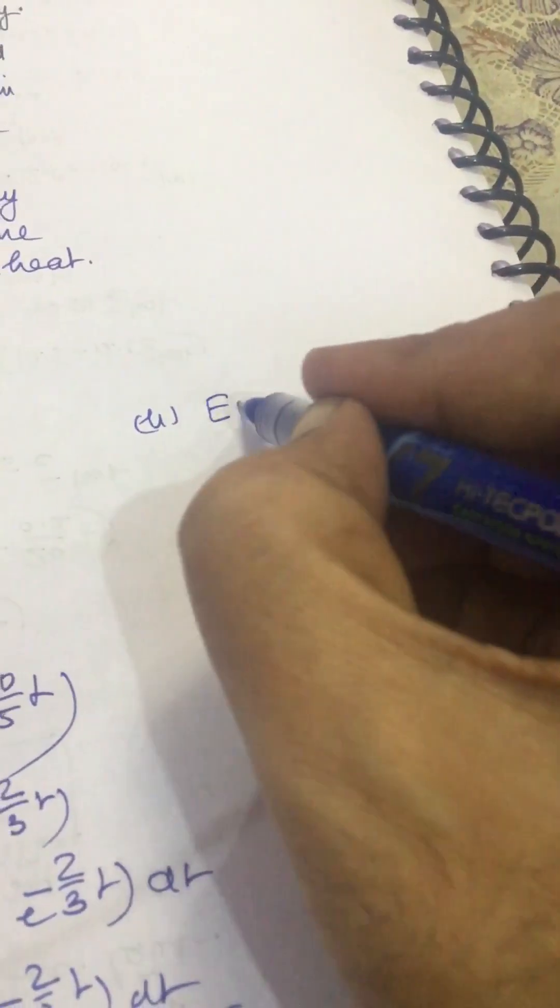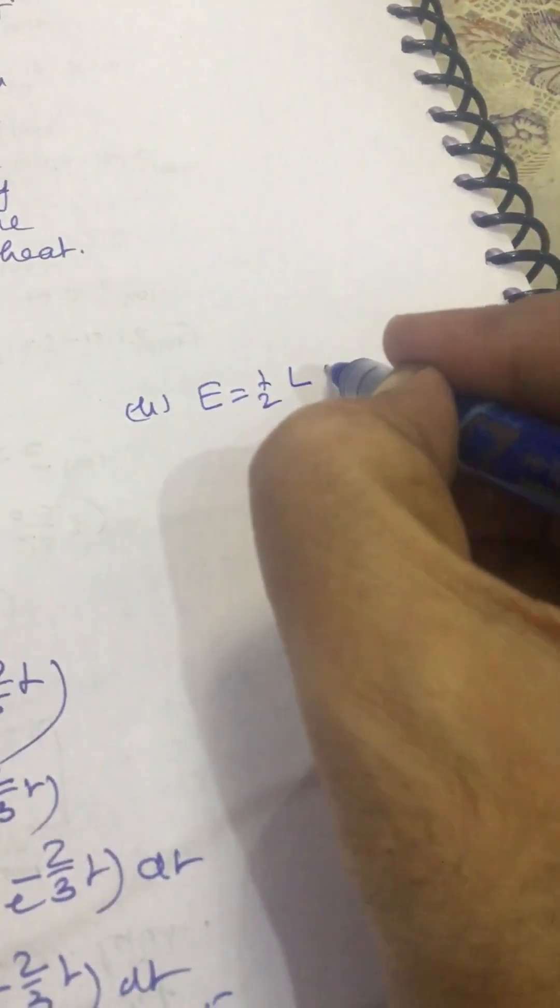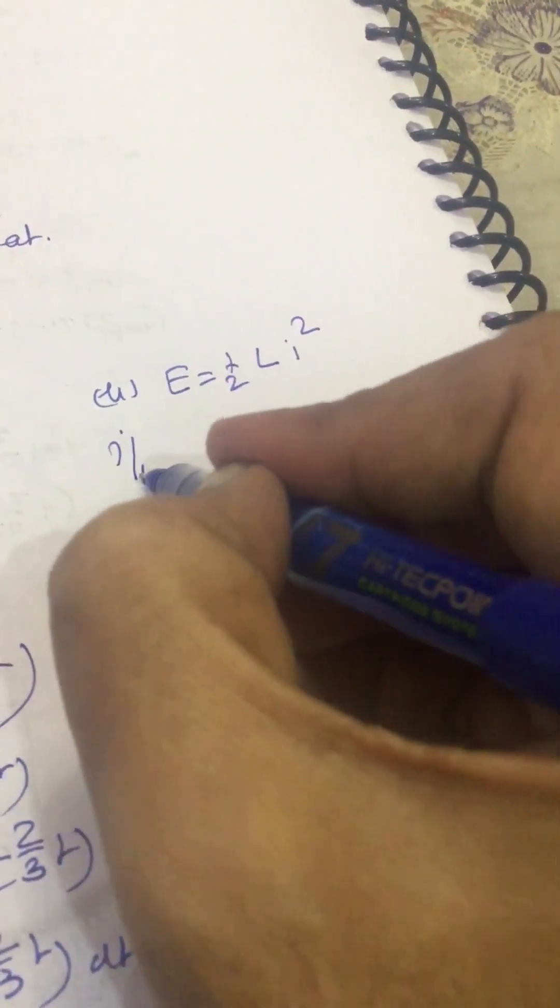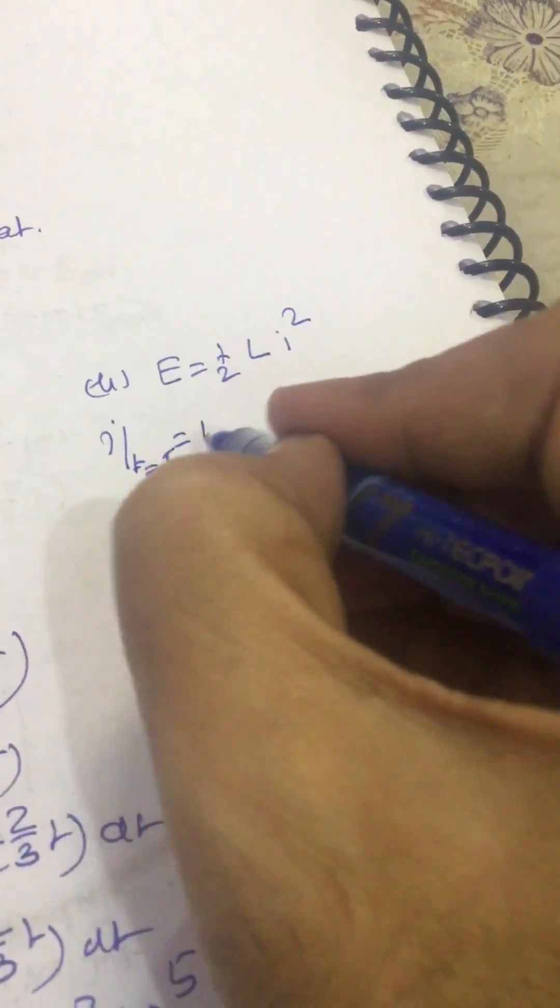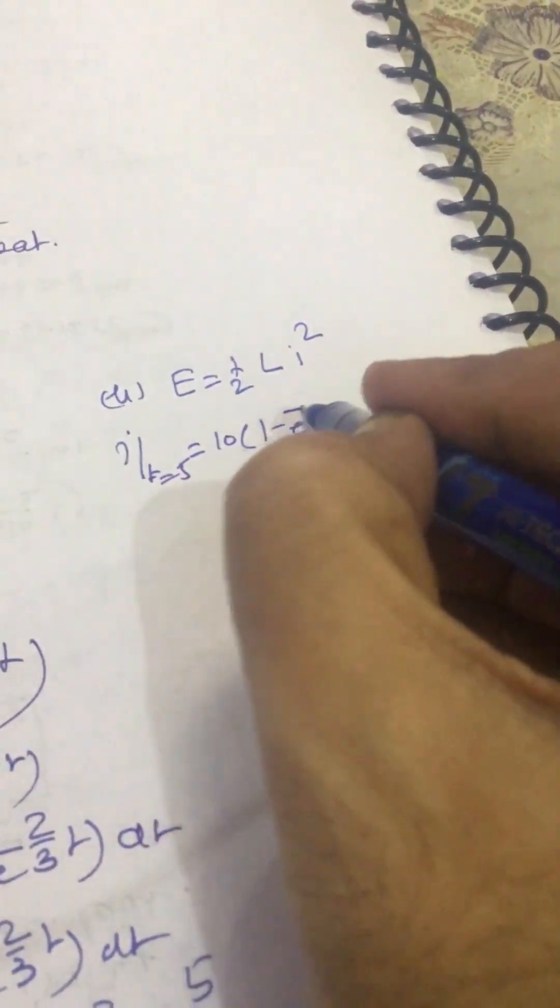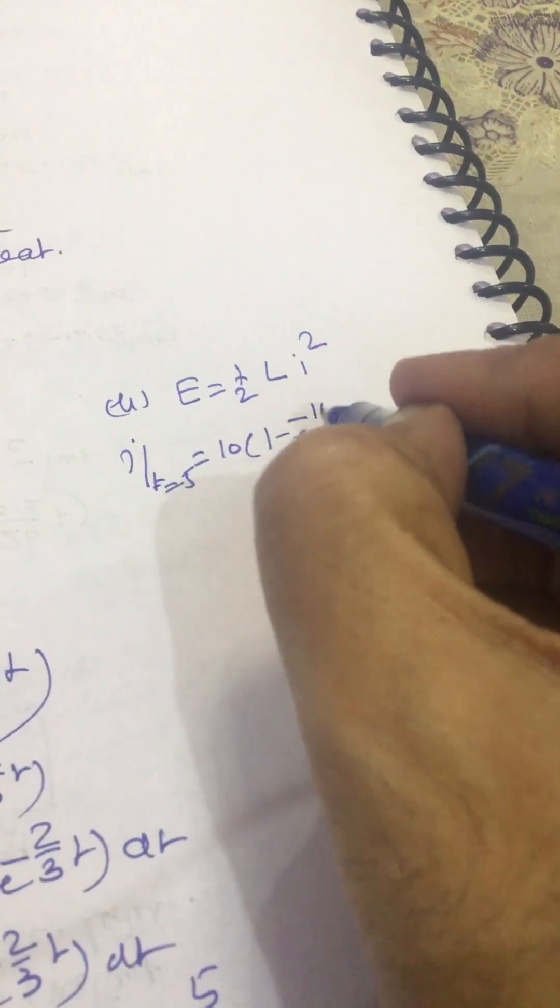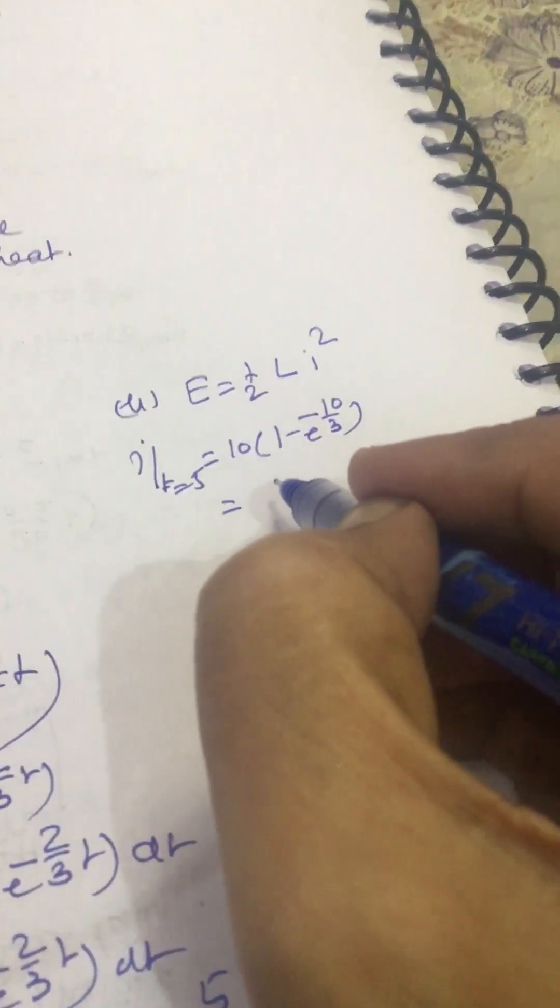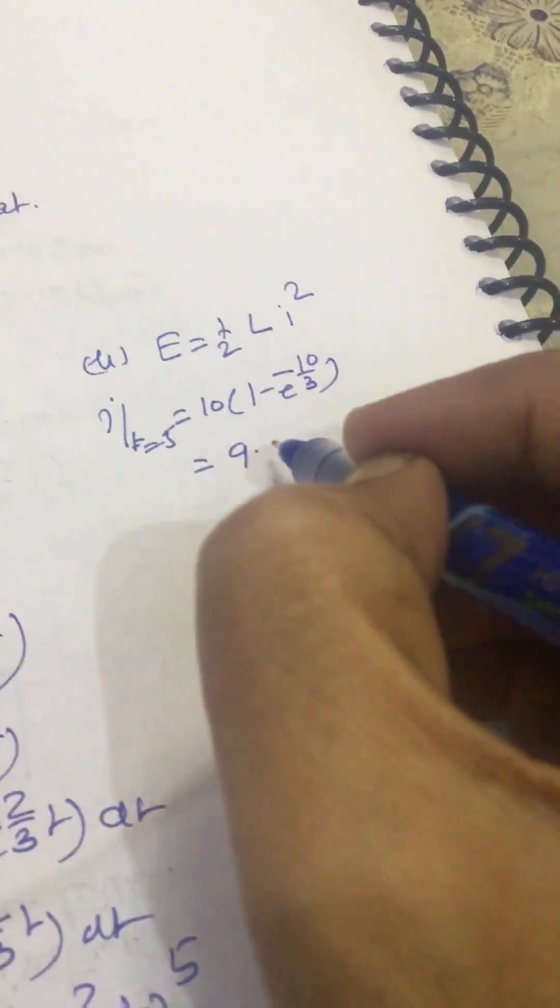E is half L i squared. Current i at t equal to 5 will be 10 times 1 minus e to power minus 10/3, equal to 9.64 amperes.